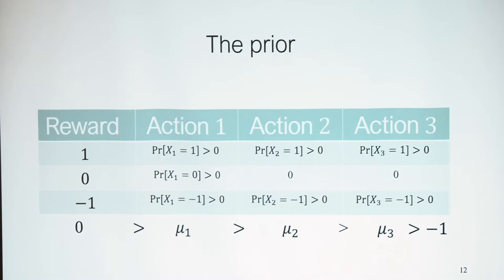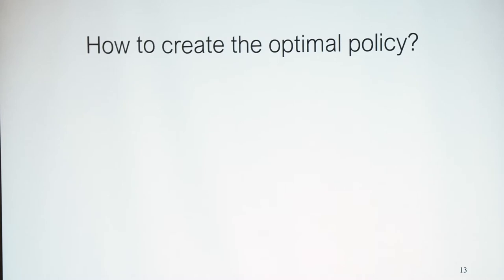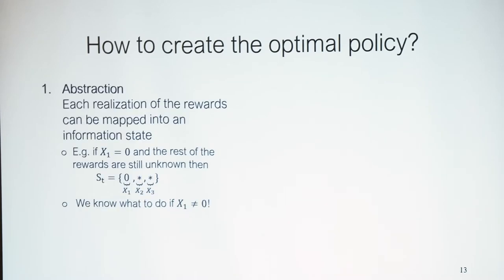Let's confirm the prior distribution setup. The first action can have rewards of plus one, zero, or minus one, while the second and third actions can only have rewards of plus one or minus one. To create this optimal policy, we start with an abstraction: in each time t, the only relevant information is the known and unknown rewards — it doesn't matter which agent explored action two, only what reward it yielded. We map reward realizations into an information state — for example, if action one has reward zero and the rest are unknown, we map it to state (0, *, *).